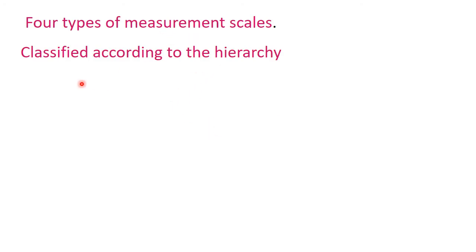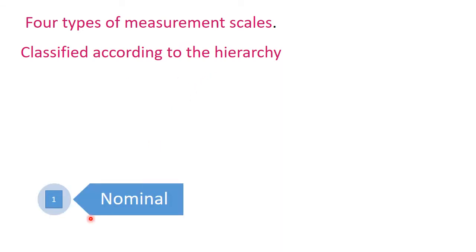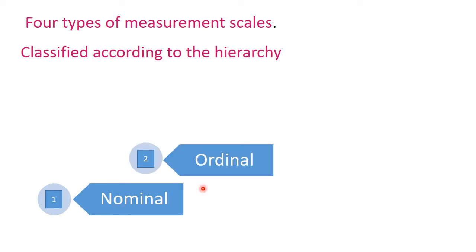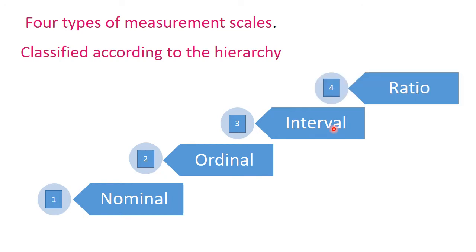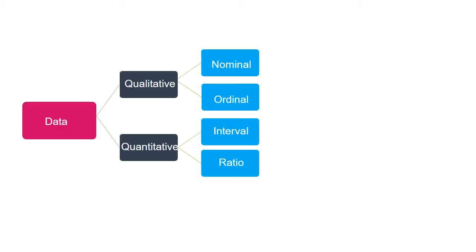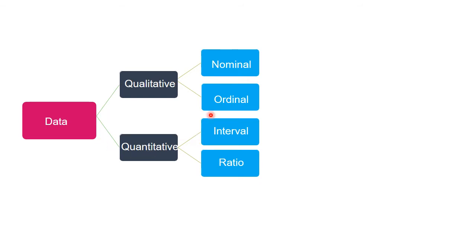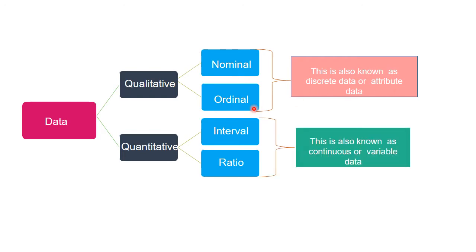There are four types of measurement scales classified according to the hierarchy. The first one is nominal scale, then ordinal scale, interval scale, and then the ratio scale. The nominal scale is at the bottom of the hierarchy and the ratio scale is at the top. Nominal and ordinal scales come under qualitative data, whereas interval and ratio scales come under quantitative data. Qualitative data is also known as discrete data or attribute data, whereas quantitative data is known as continuous or variable data.